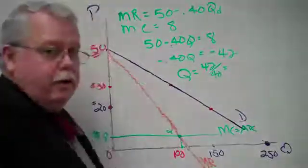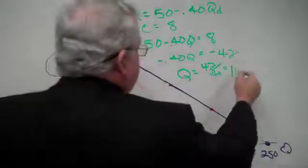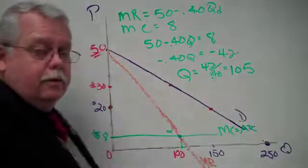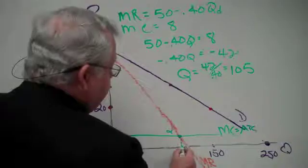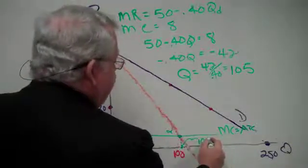Solving we get Q equals negative 42 over negative 0.40. If you solve that, it's 105. So the quantity here for profit maximization is 105 units.